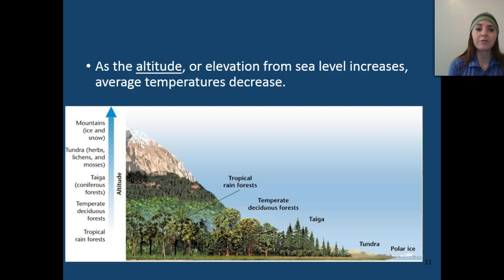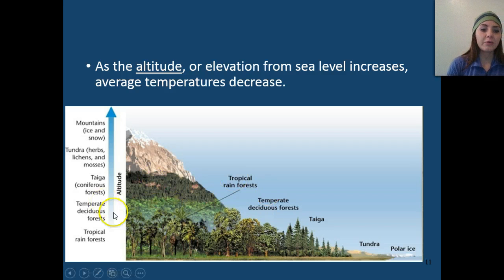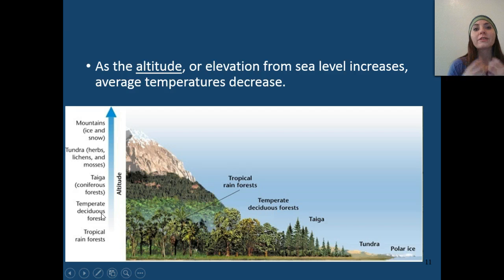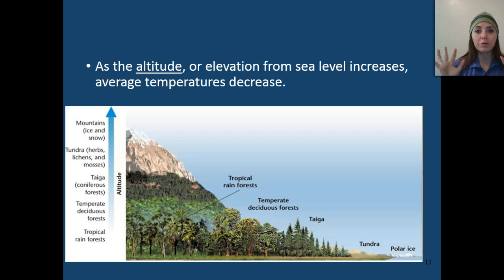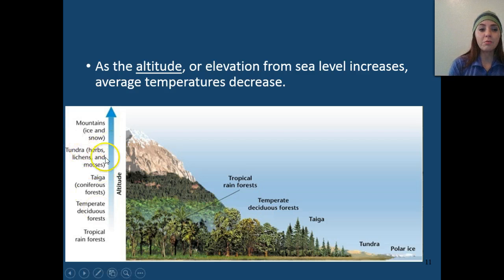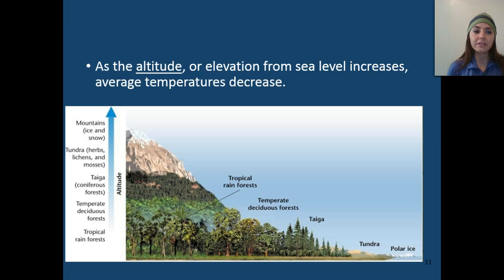As altitude — the elevation from sea level — increases, the average temperature decreases. As we climb a mountain, the temperature drops the higher we go. At lower altitudes we might have tropical rainforests. As we increase in altitude, we find temperate deciduous forests where leaves change colors and fall off. Then comes the taiga, our coniferous evergreen forests with pine cones and pine needles that let snow fall off without breaking branches. Increasing altitude further takes us into the tundra, which can't support large trees — you see shrubs, herbs, lichens, mosses, and eventually just icy, snowy mountains.